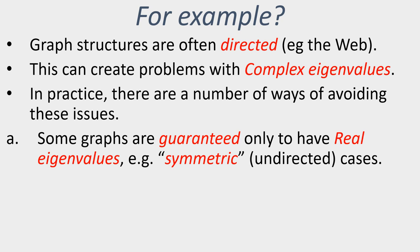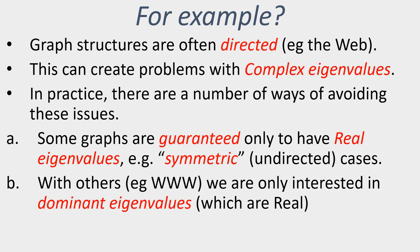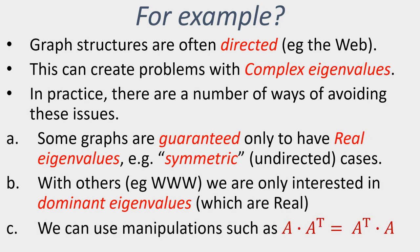In practice, however, there are a number of ways of getting around these or avoiding issues arising with complex eigenvalues. For example, some graphs are guaranteed only to have real eigenvalues. A typical example is the case of symmetric graphs, which really correspond to undirected graph structures. Others, the world wide web structure being one example, we're only interested in dominant eigenvalues—the largest eigenvalue—and in the case of the world wide web, if we have an appropriate structure, that dominant eigenvalue is guaranteed to be a real number.